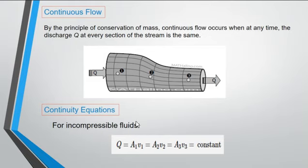For incompressible fluids like water, the continuity equation is Q equals A1 times V1 equals A2 times V2 equals A3 times V3, and so on. Where A is the cross-sectional area at each section and V is the velocity at each section.